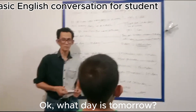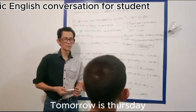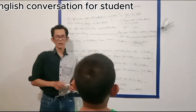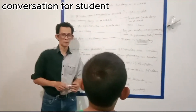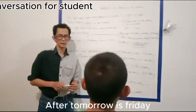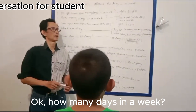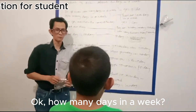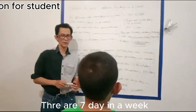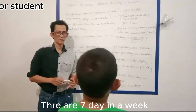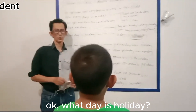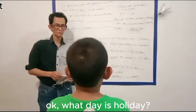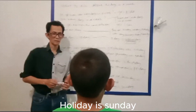What day is tomorrow? Tomorrow is Thursday. Okay. What day is after tomorrow? Tomorrow is Friday. Okay. How many days in a week? There are 20 days. No. What day is Friday? Tomorrow is Saturday.